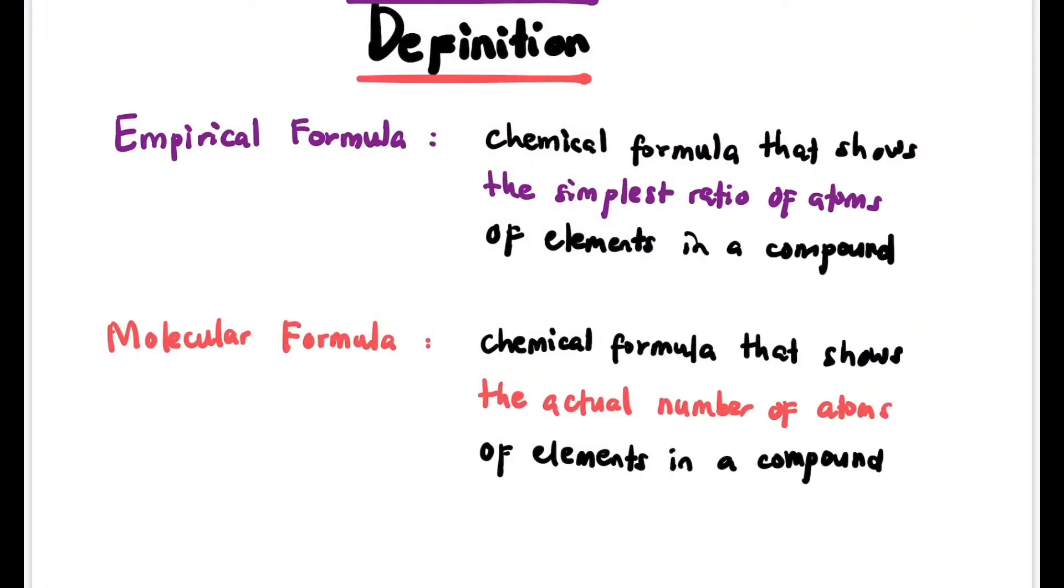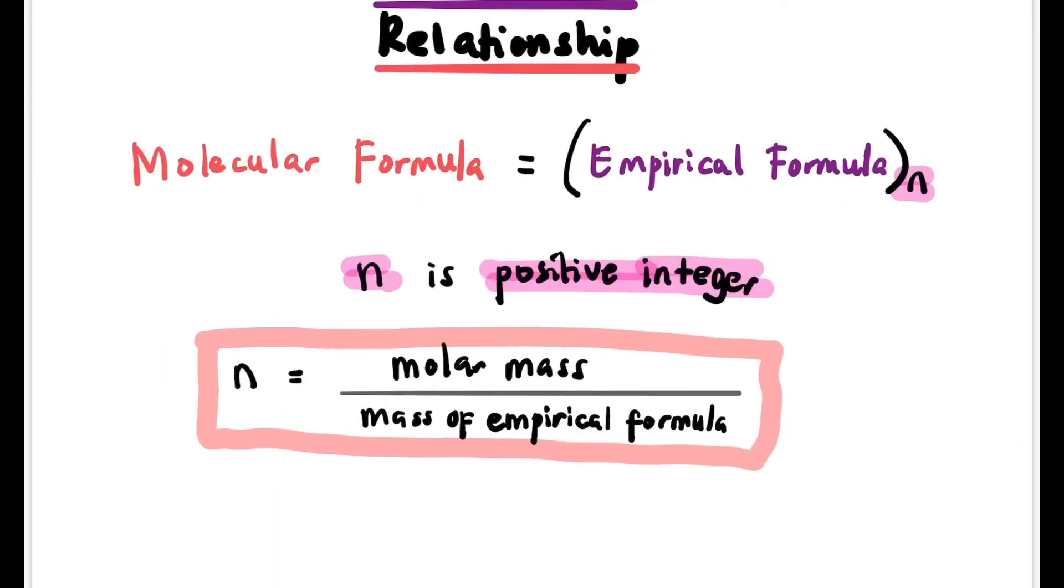Let's go to the definitions. Empirical formula is defined as the chemical formula that shows the simplest ratio of atoms of element in a compound. Molecular formula is a chemical formula that shows the actual number of atoms of element in a compound. Molecular formula equals empirical formula times n, where n is a positive integer and can be defined by using molar mass divided by mass of empirical formula.